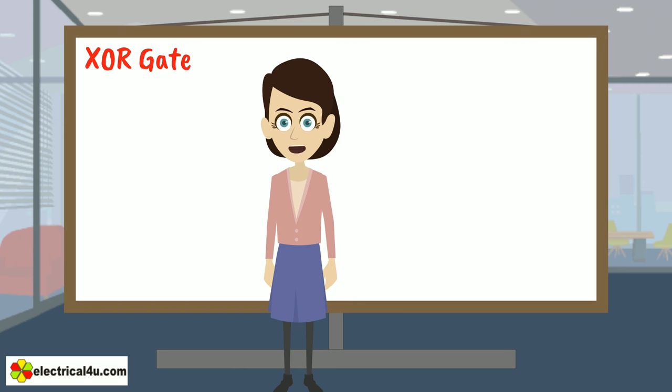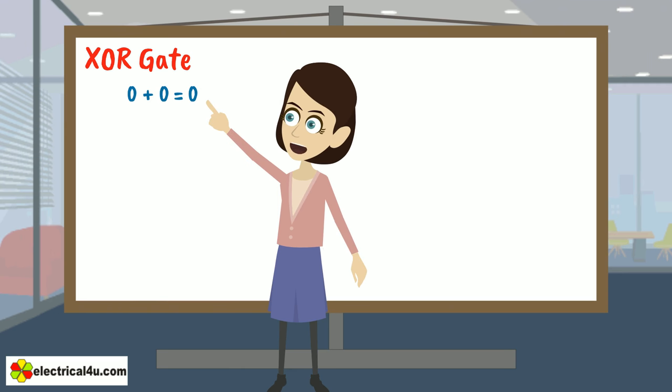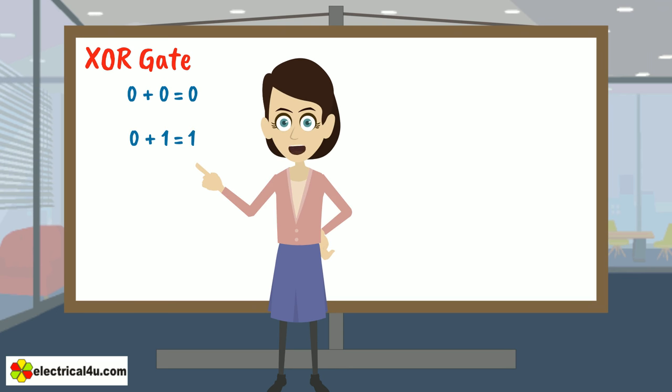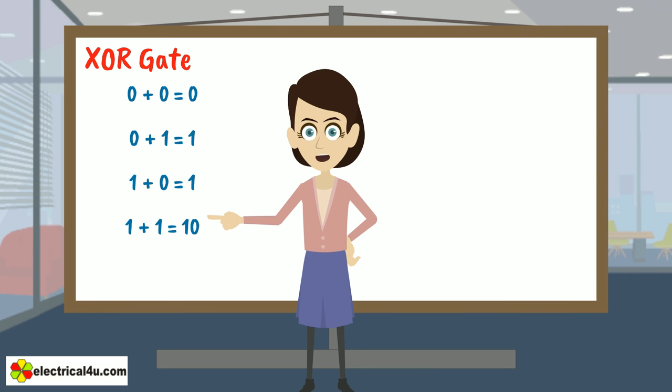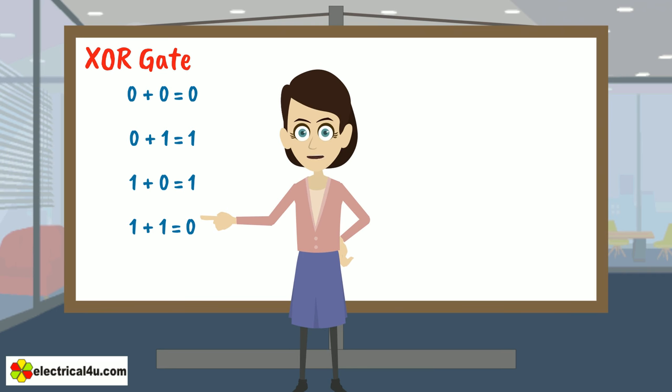Let us discuss about XOR gate. Modulo sum of two variables in binary system is like this: 0 plus 0 equals 0, 0 plus 1 equals 1, 1 plus 0 equals 1, and 1 plus 1 equals 0, and here carry is 1.